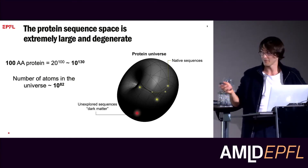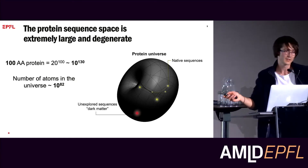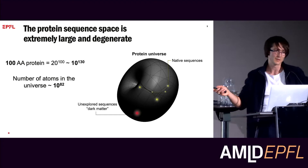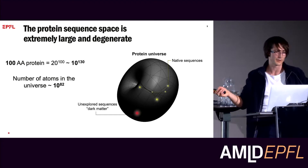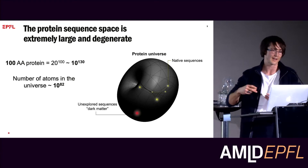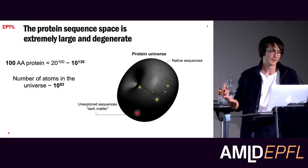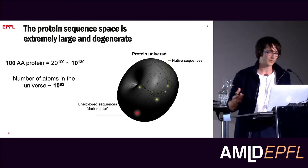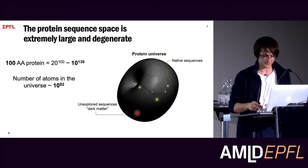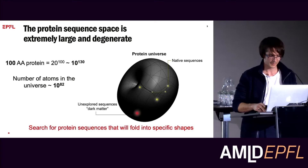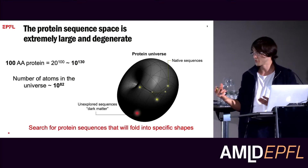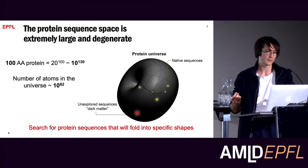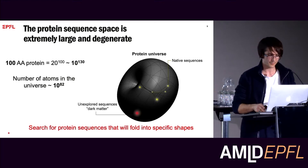If you would do this randomly, a lot of those sequences would not fold. If you try them experimentally, they would just aggregate and not be functional or have a specific structure. So can we somehow search for sequences that will fold into a very specific shape?